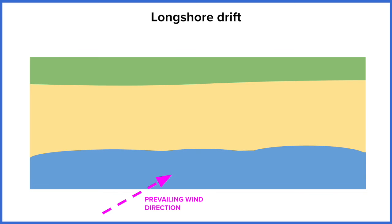So here's our prevailing wind direction — the wind's blowing towards the northeast on our diagram. And here's the pebble that we're going to track. The wave moves up the beach, which is called the swash, and it's going to deposit that pebble on the beach.